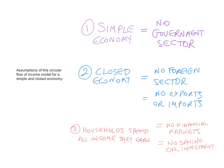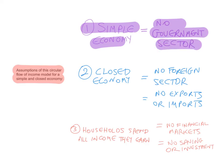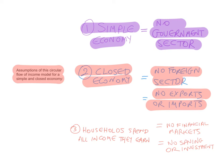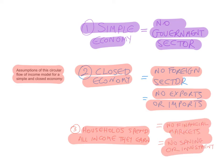The assumptions of this circular flow of income model in a simple and closed economy are: first, it's a simple economy — there's no government sector, so there are no taxes and no government expenditure. Second, it's a closed economy — there's no foreign sector, which means no exports and no imports. Third, households spend all the income they earn — we assume there are no financial markets, no saving or investment. This is an overly simple model of how an economy works.